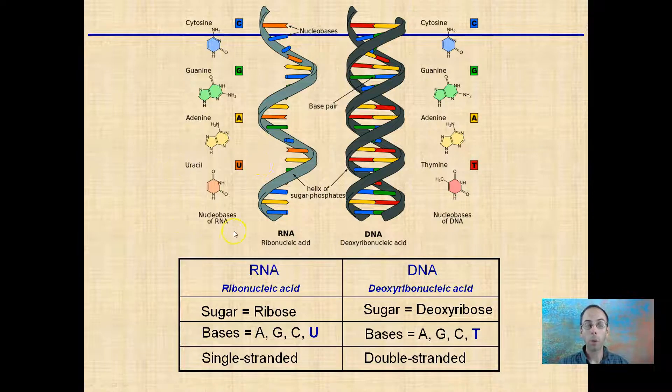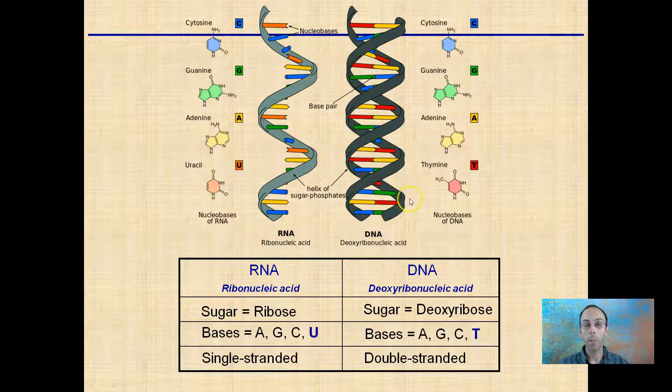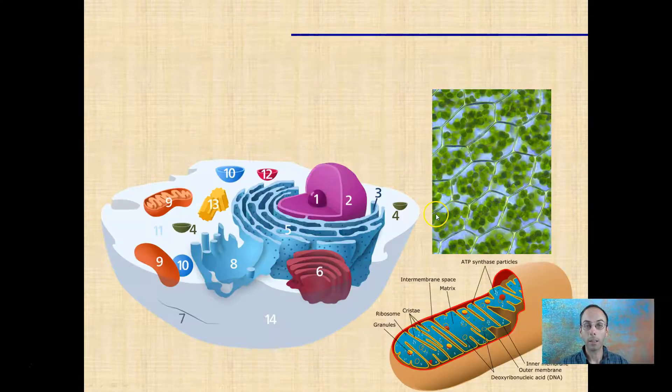The key part here is if we look at our monomeric unit — our nucleotides — uracil immediately indicates it's RNA, and thymine immediately indicates it's DNA.